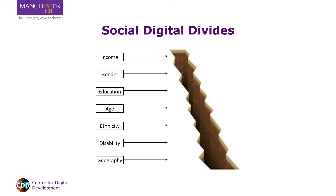Linked to but distinct from the income divide are many others: that men tend to have greater access to ICTs than women, that the more educated use digital more than the less educated, that older people use ICTs less than younger people, and so on. Where these factors combine they form intersecting digital divides that can leave particular groups especially marginalised.